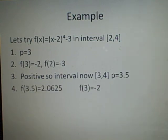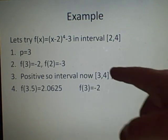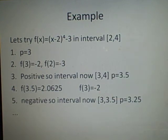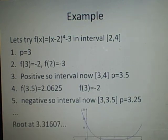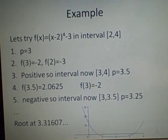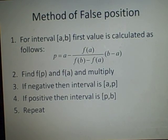We put 3.5 into f(p), which gives about 2.0-something — it's positive. Our f(a) is now f(3), and we multiply them to get a negative. So we know it's now between 3 and 3.5. Our next value of p will be 3.25. We carry this on until we get enough significant figures, and we find the solution is at approximately 3.31607. It's normally solved in a table. Looking at the graph, we can see a root around 3.3 and another root around 0.7.